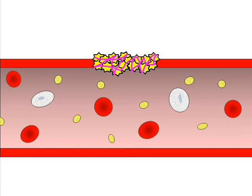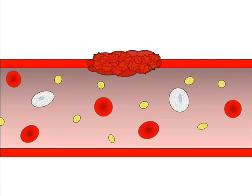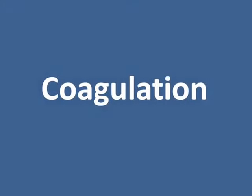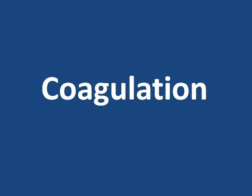Red blood cells and white blood cells become trapped in the meshwork as it forms, giving the plug its characteristic red color. The overall process of forming these fibrin strands to solidify the clot is called coagulation.